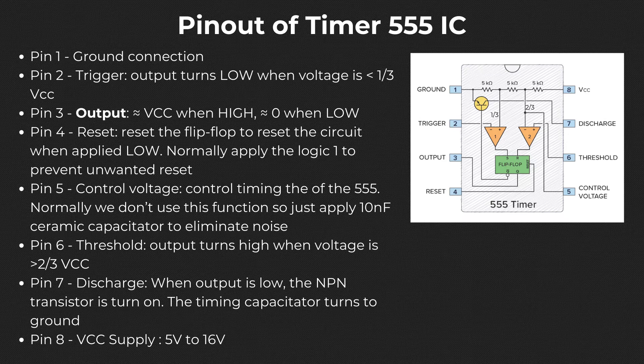Pin 5 can control the timing of the 555 IC by overriding the two-thirds VCC threshold, and you can utilize it to change the width of the output signal. When we don't need this function, connect it to a 10 nanofarad capacitor to ground to eliminate noise, though using smaller values like 100 picofarads seems to work as well. Pin 4 can reset the circuit when applied low, so we just connect it to VCC to prevent unwanted resetting. Pin 7 is very important as it allows the timing capacitor to discharge through ground. It is strongly recommended that you don't remove R1 and connect this pin straight to VCC.